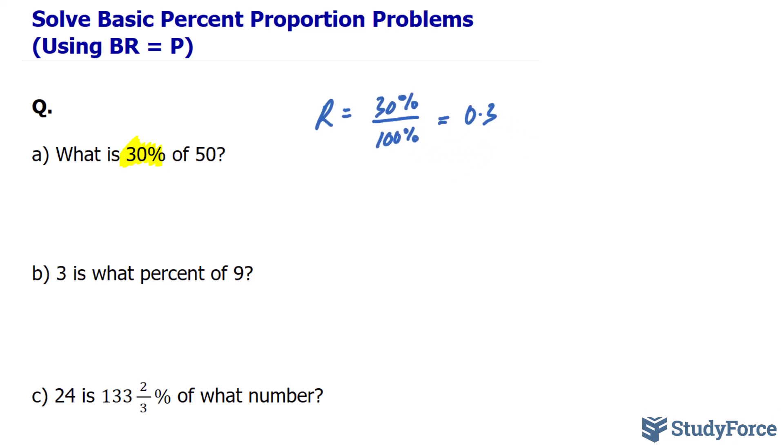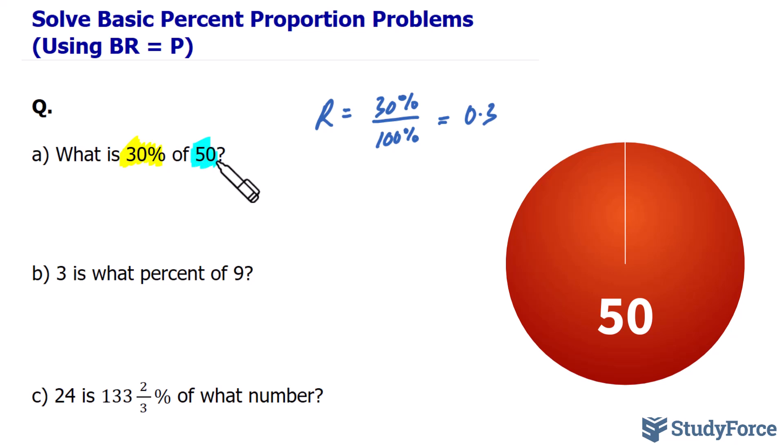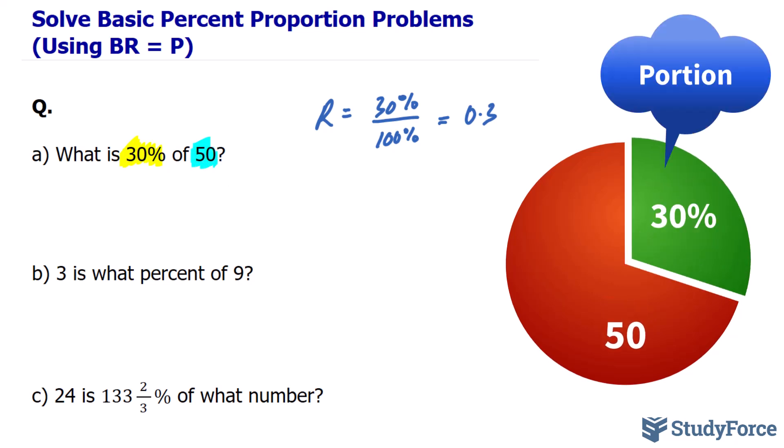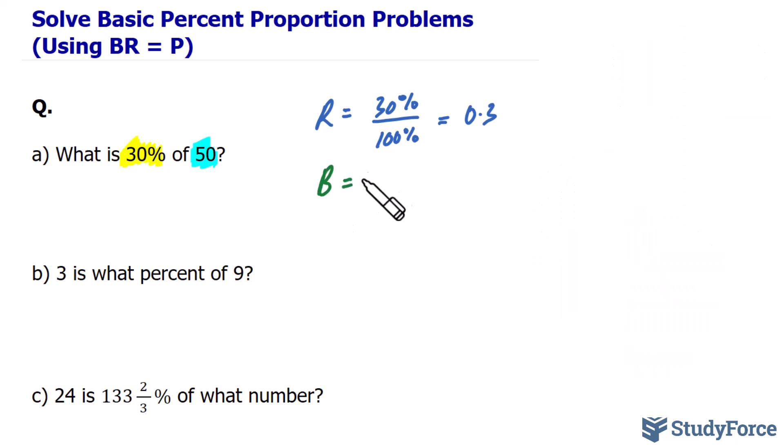It also helps to reread the question: what is 30% of 50? Here 50 represents your base value, and what we're looking for is a 30% portion of 50. So let's write that down. Our base value is 50, and let's use this in our formula.